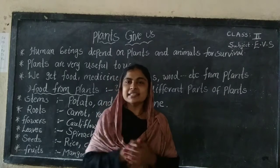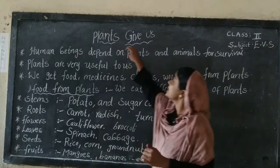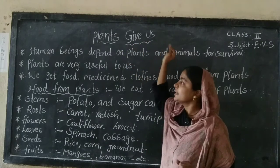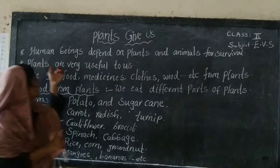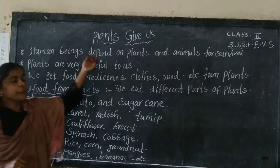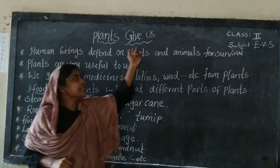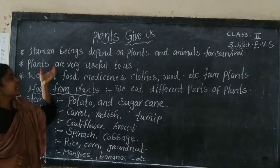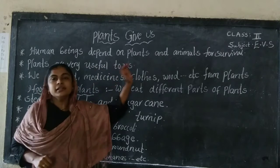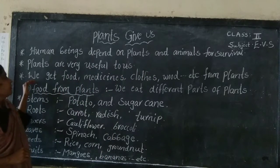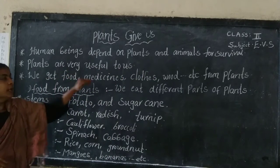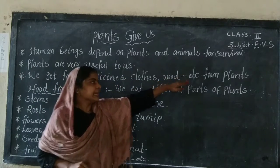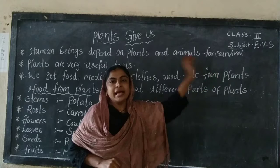Today we are discussing about what plants give us. Human beings depend on plants and animals for survival. Plants are very useful to us. We get food, medicines, clothes, wood, etc. from plants.